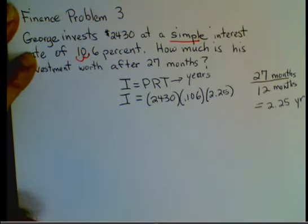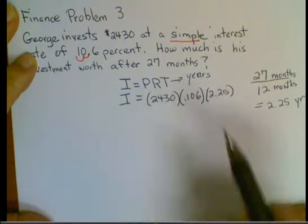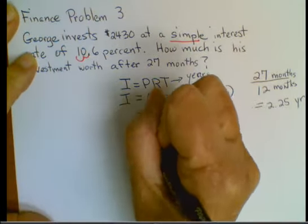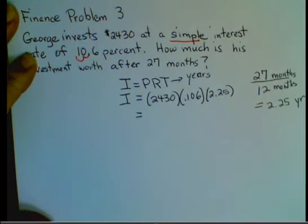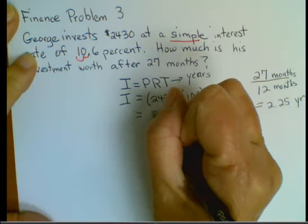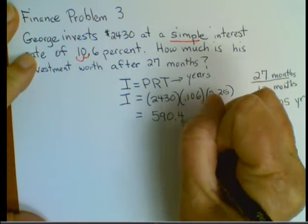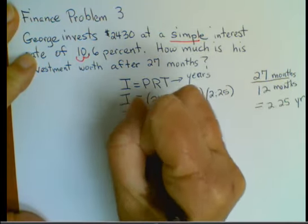That will equal our interest. So we need to do all the multiplication on the right hand side. Just punch that in your calculator. And I came up with $590.49. This is the interest.